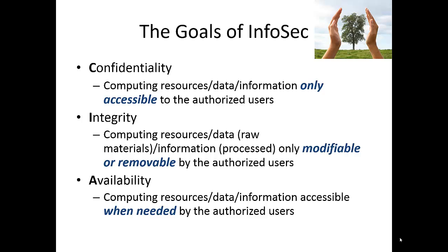Integrity means changes or deletion of a computing resource, data, or information is only allowed for authorized users. Finally, availability means any computing resources, data, or information are accessible when needed by the authorized users — meaning when they need to use a resource, it has to be available and accessible.